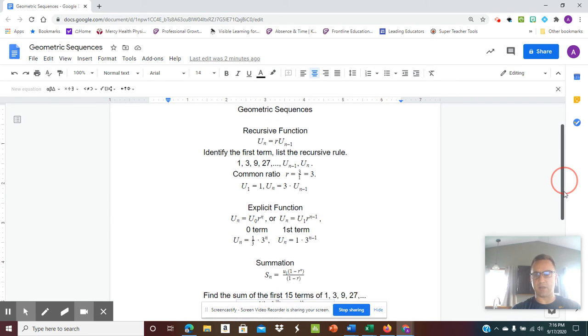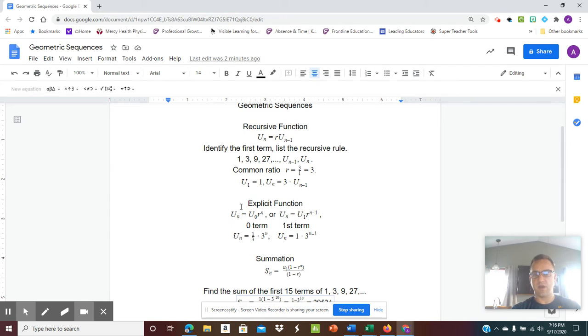The explicit function is a little bit different. So we have some choices. We could write an explicit function based on the 0 term. So this relates to exponentials. So the u sub n equals u sub 0 times r to the n power. So in our example, we don't have the 0 term. So the first term is 1. So if I work backwards, I can divide by 3. So my 0 term would be 1 third. And then the common ratio is 3 to the n power.